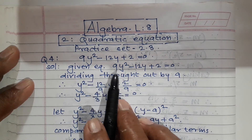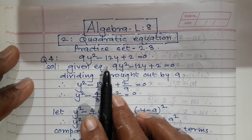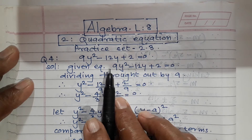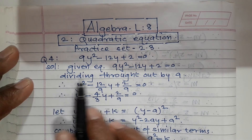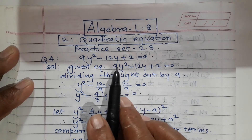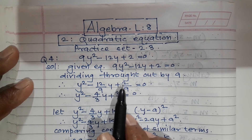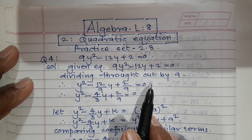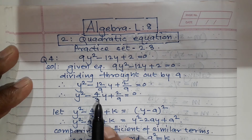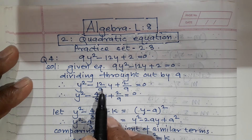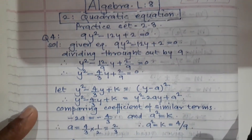In this method, you know the condition: first you make the coefficient of y² equal to 1. Therefore, here you divide throughout by 9. Dividing throughout by 9, this 9 gets cancelled and you get y² minus 12/9 y plus 2/9 is equal to 0. Simplifying: y² minus 4/3 y plus 2/9 is equal to 0.